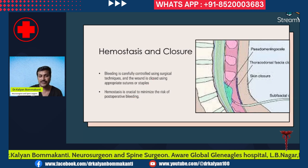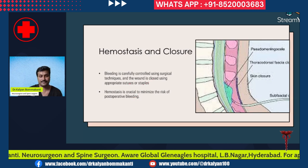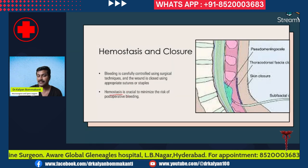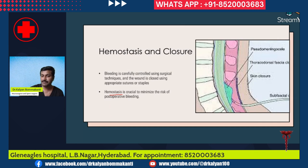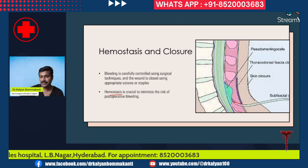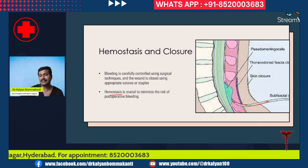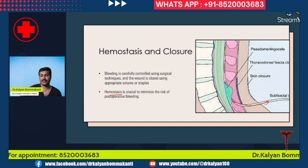Controlling bleeding is very important. Ensure perfect hemostasis so that bleeding is completely controlled. The wound is then closed using appropriate sutures. Hemostasis is crucial to minimize the risk of postoperative bleeding. A drain is usually placed so that if there is any residual bleeding, it comes out through the drain.